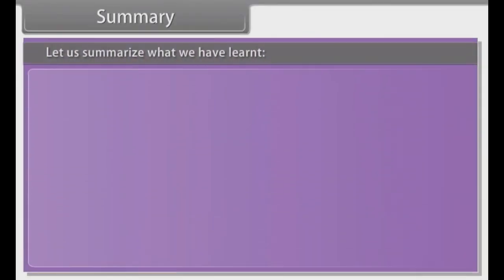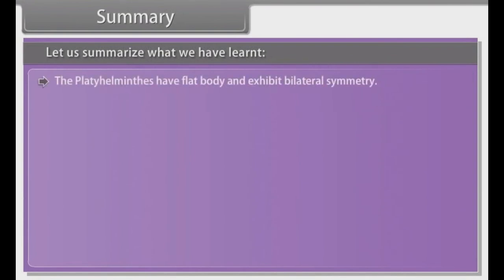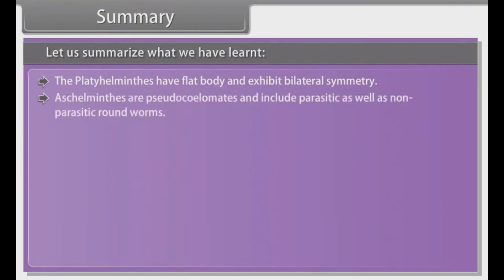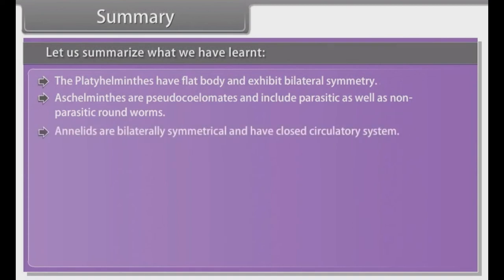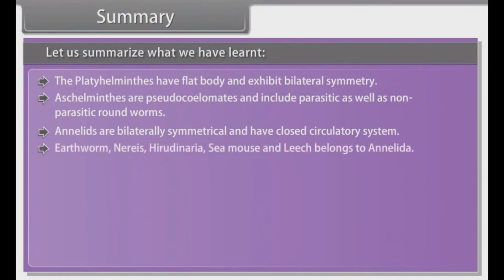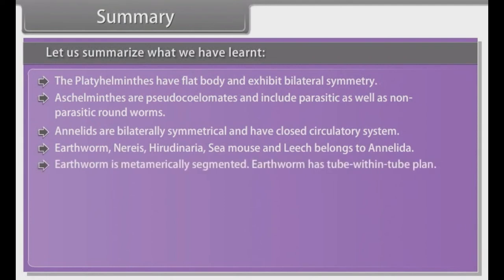Summary. Let us summarize what we have learned. Platyhelminthes have a flat body and exhibit bilateral symmetry. Aschelminthes are pseudocoelomates and include parasitic as well as non-parasitic roundworms. Annelids are bilaterally symmetrical and have a closed circulatory system. Earthworms, Nereis, Hirudinaria, sea mouse and leech belong to Annelida. Earthworm is metamerically segmented and has a tube-within-tube body plan.